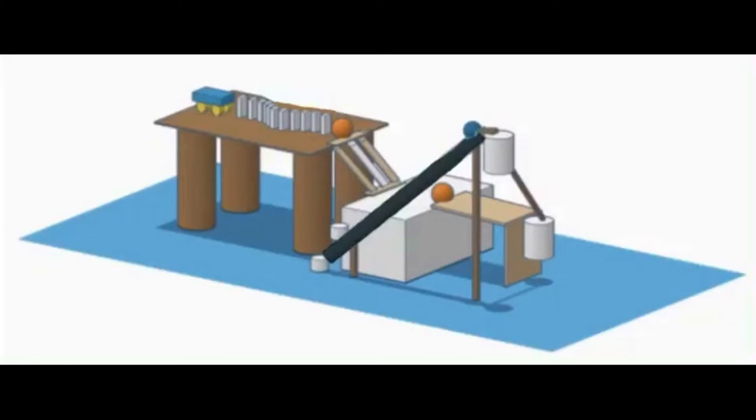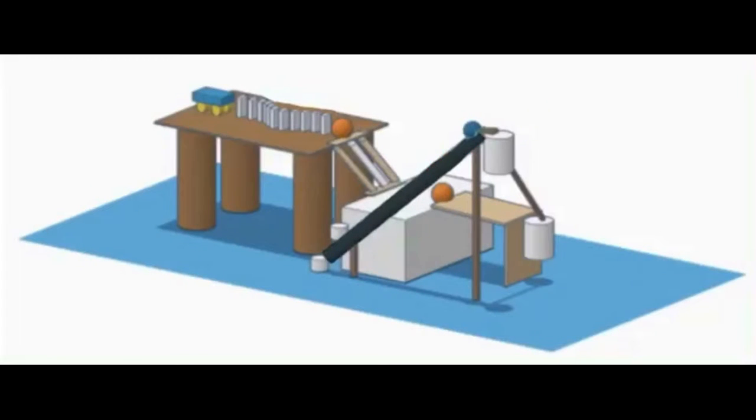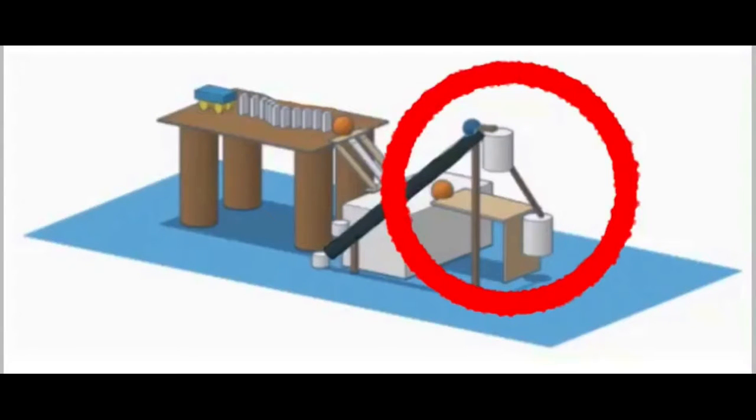Step five has the ball from step four go down the inclined plane and into a pulley. This step is using the first and second laws of motion. Step six is when the ball goes in the pulley, the pulley releases an equal opposite force on the other side of the pulley, making the pulley shake. This step uses the first, second, and third laws of motion.